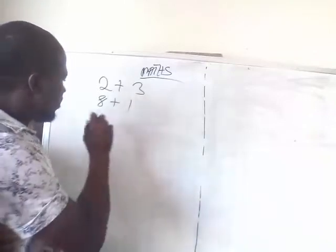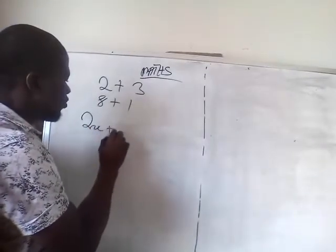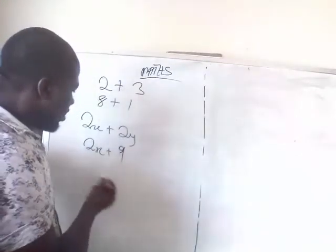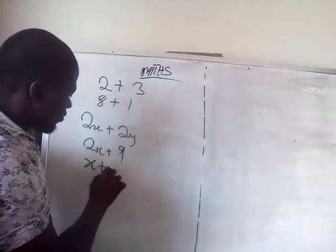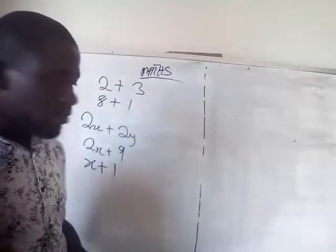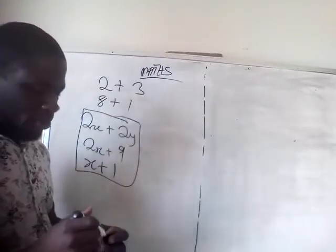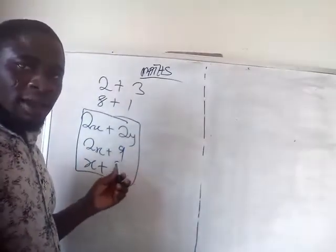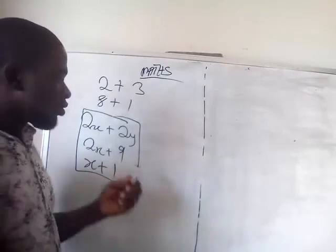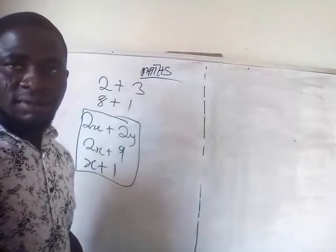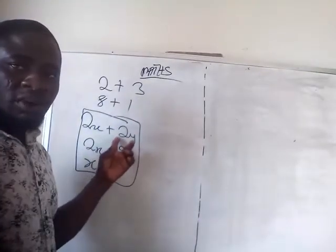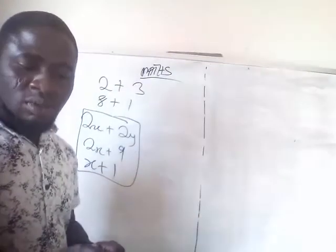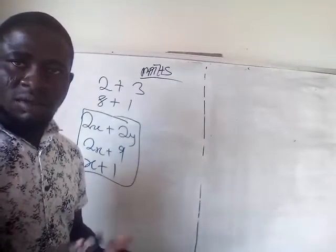But in algebraic expression, you will be seeing something like 2X plus 2Y, or 2X plus 9, or X plus 1. All these are algebraic expressions because variables are included in them. In any expression, once you can see a variable or two variables, it is an algebraic expression.